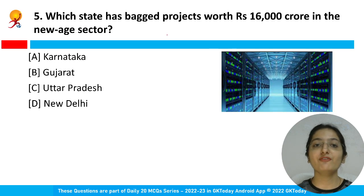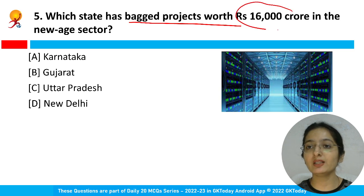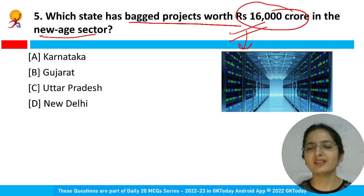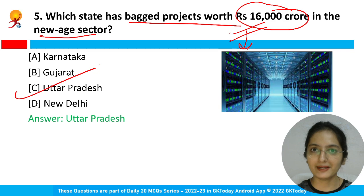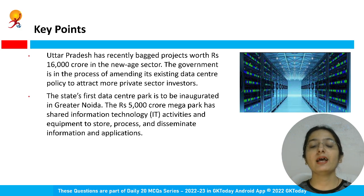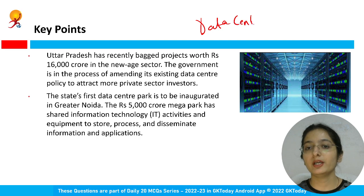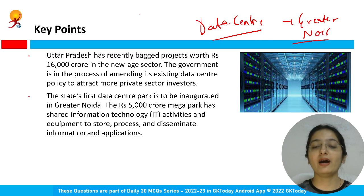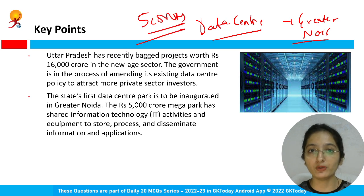Which state has backed projects worth rupees 16,000 crore in the new age sector? The answer is Uttar Pradesh, option C. The government is in the process of attracting more private sector investors. Uttar Pradesh's first data center park is to be inaugurated in Greater Noida — a mega park worth 5,000 rupees crore.